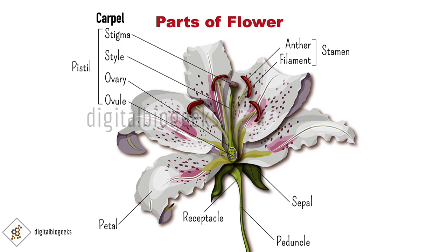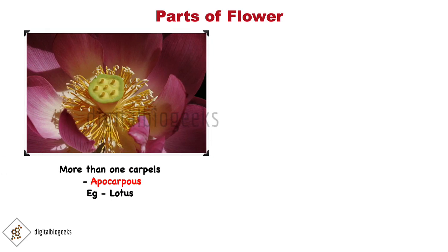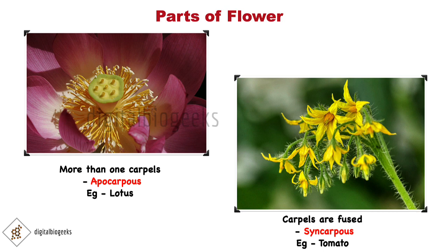The gynoecium contains one or more carpels. When more than one carpel is present and they are free from one another, they are called apocarpous — for example, lotus. When the carpels are fused, like in mustard and tomato, it is called syncarpous. After fertilization, the ovules develop into seeds and the ovary develops into fruits.